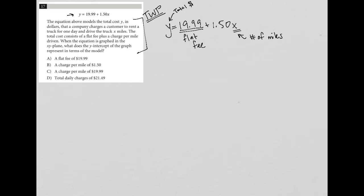The next sentence says the total cost consists of a flat fee. Perfect, we already identified that. Plus a charge per mile—well, that's going to be this $1.50 because that's associated with the x, which we know represents number of miles.